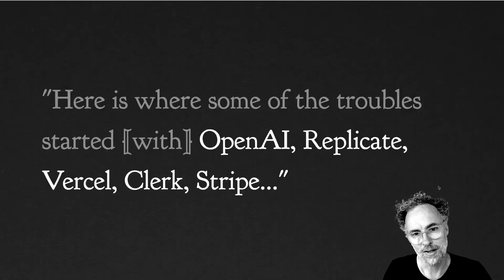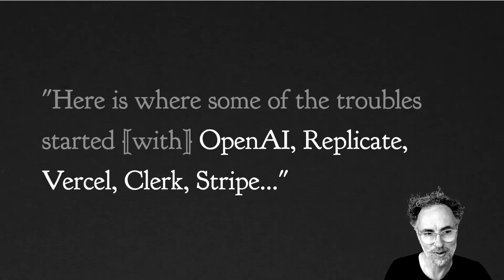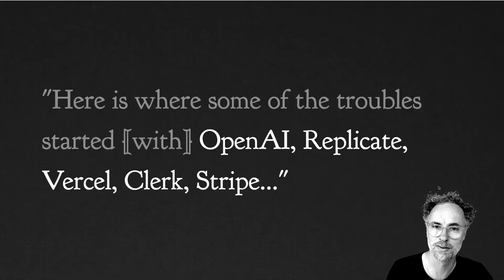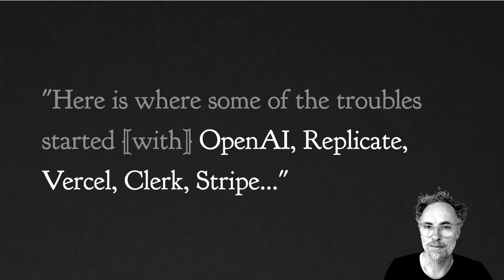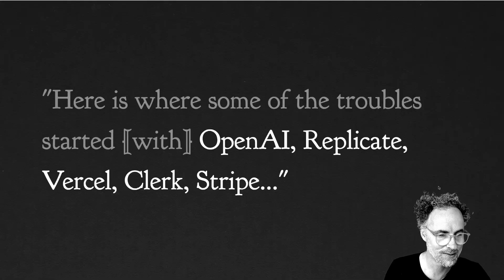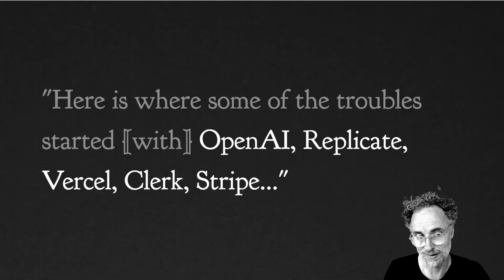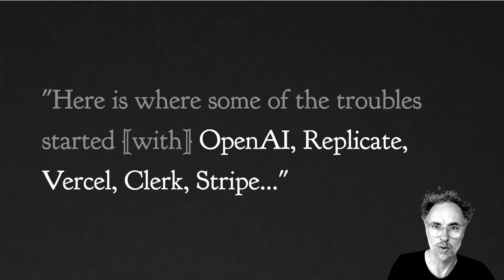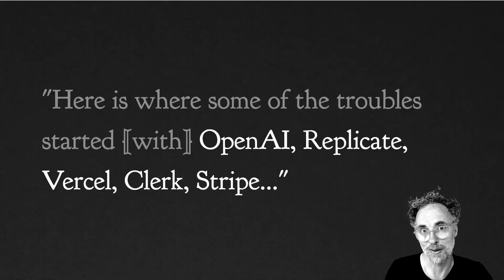Andre said vibe coding Menugen was exhilarating and a fun escapade as a local demo, but a bit of a painful slog as a deployed real app — and that's what I want to dig into here. Here is where some of the trouble started: with OpenAI, Replicate, Vercel, Clerk, Stripe, etc. These are some of the products he used to build Menugen. This is kind of a double-edged sword — on one hand it's really exciting to be mentioned among all these well-respected tech companies, but at the same time Andre was also raking us all over the coals with some very valid and specific feedback about the shortcomings of these products and the friction he encountered along the way.